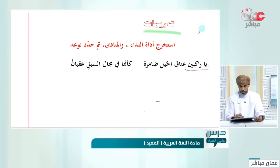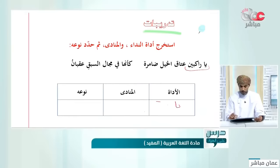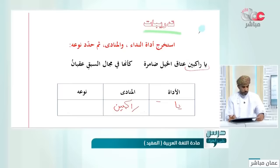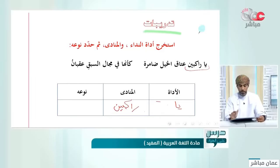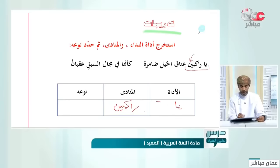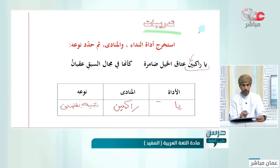يا راكبين عتاق الخيل ضامرةً كأنها في مجال السبق عقبان. الأداة 'يا' والمنادى 'راكبين'. لاحظ أنه لم يقل 'يا راكبي عتاق الخيل' بل قال 'يا راكبين' والنون لم تُحذف، إذن هذا شبيه بالمضاف.